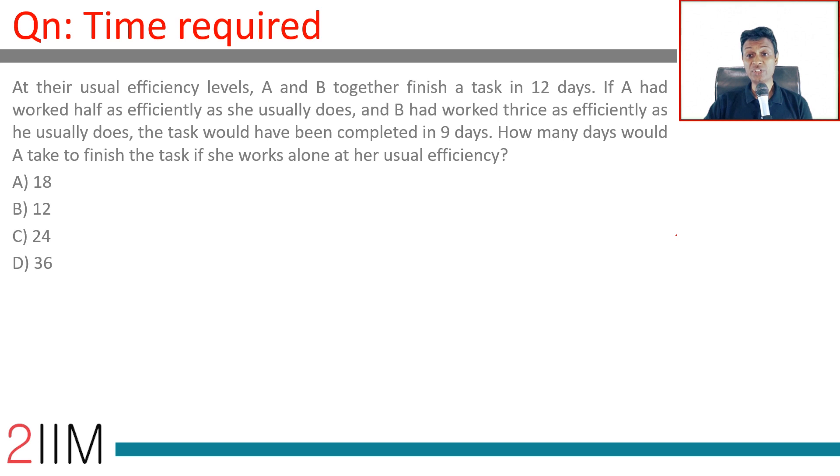Time required at their usual efficiency levels: A and B together finish a task in 12 days. If A takes a days and B takes b days, they'll do 1/a of the task plus 1/b of the task in one day.